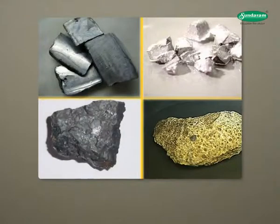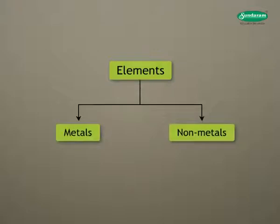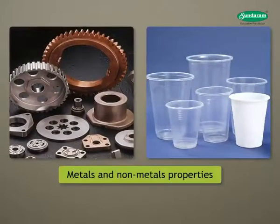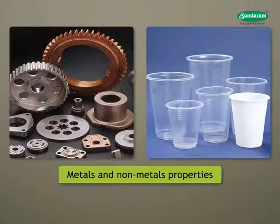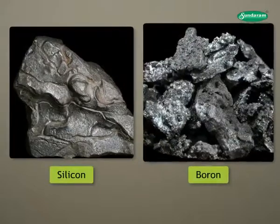In earlier days, very few elements were known. At that time, they were classified as metals and nonmetals on the basis of their properties. Some elements showed properties of both metals and nonmetals, and they could not be placed in any of the two classes. For example, silicon and boron.